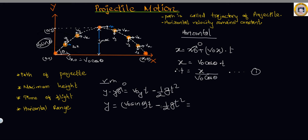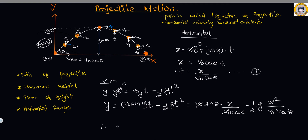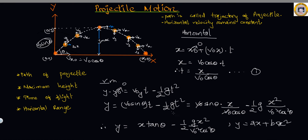Now let me replace t with x over v-naught cosine theta from equation one. Substituting, y equals v-naught sine theta times (x over v-naught cosine theta) minus one-half g times (x over v-naught cosine theta) squared. Simplifying, y equals x tan theta minus (g x-squared) over (2 v-naught-squared cos-squared theta). This is the form of a parabola — y equals ax plus bx-squared — confirming the path followed by a projectile is parabolic.